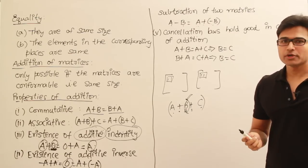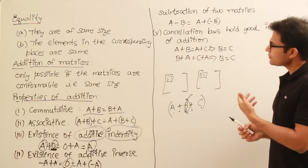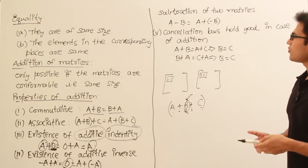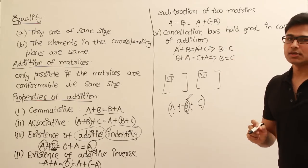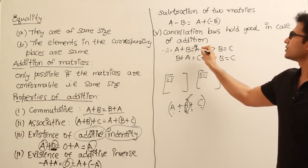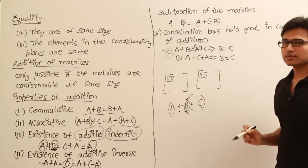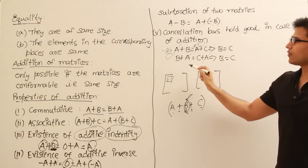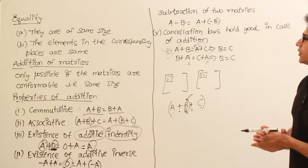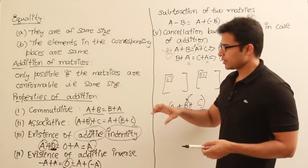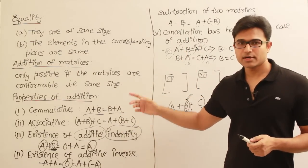The last property is cancellation. You can apply cancellation to matrix addition as well. For example, if A + B = A + C, you can cancel out A on both sides by adding −A to both sides. Those terms reduce to the zero matrix, and since zero plus B is B and zero plus C is C — by the additive identity — you get B = C. These properties will not be asked directly but will be combined in set theory questions.